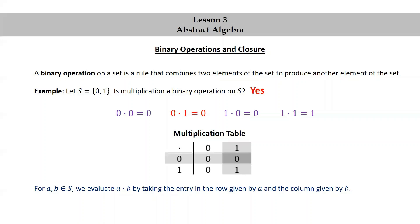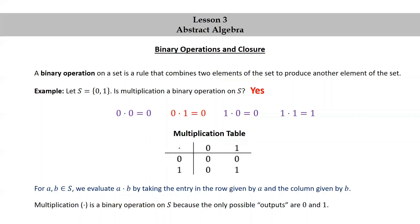I would recommend pausing the video and making sure you understand how the other three computations work using this multiplication table. Multiplication is a binary operation on the set S because the only possible outputs are 0 and 1. There are two inputs, 0 and 1, and four outputs, but all four of those outputs are 0s and 1s.